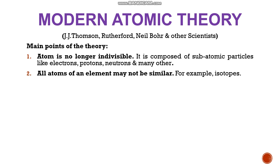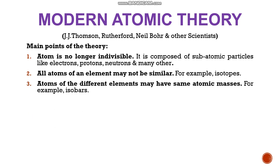The second point is that all atoms of an element may not be similar. According to Dalton, atoms of an element are absolutely identical in every aspect. But when isotopes were discovered, it was found that atoms of the same element can have different masses. So the concept that atoms of the same element cannot differ was changed. Because in isotopes, there is a difference of mass between atoms of the same element. Next, atoms of different elements may have the same atomic masses — after the discovery of isobars, it was found that different elements can also have similarities such as the same atomic masses.